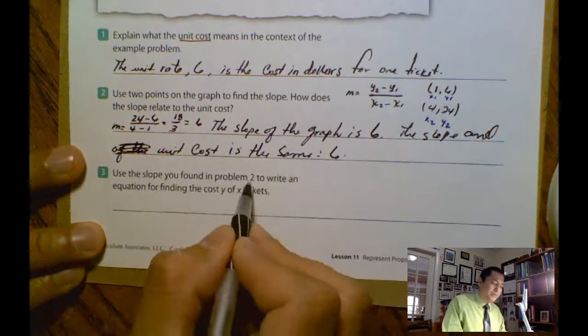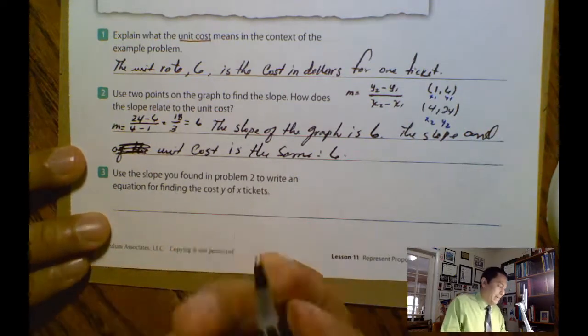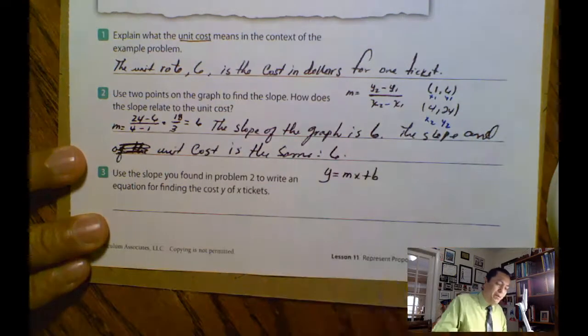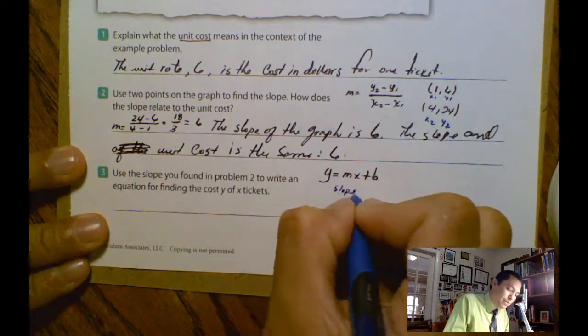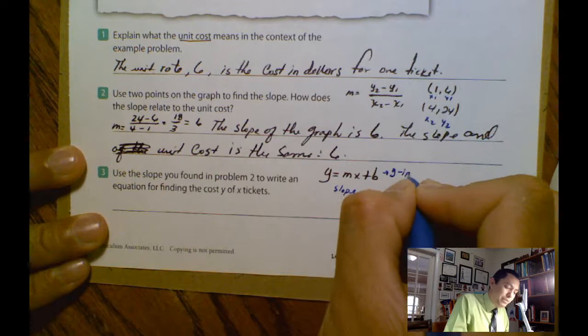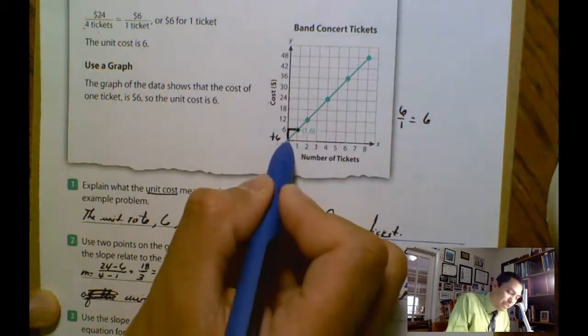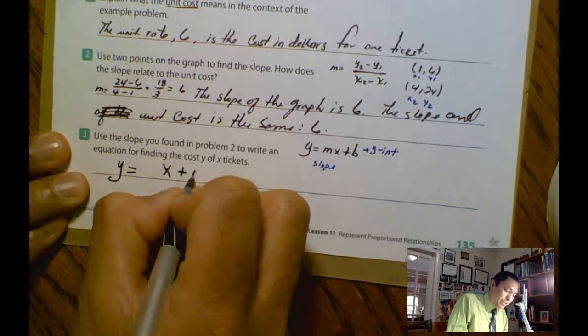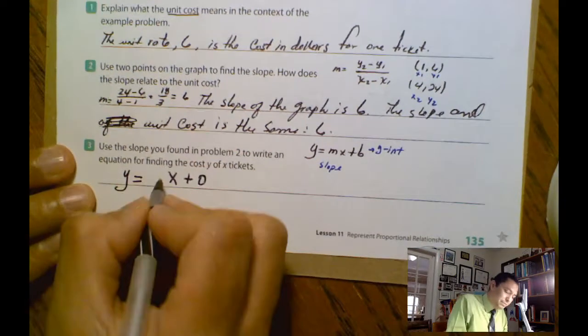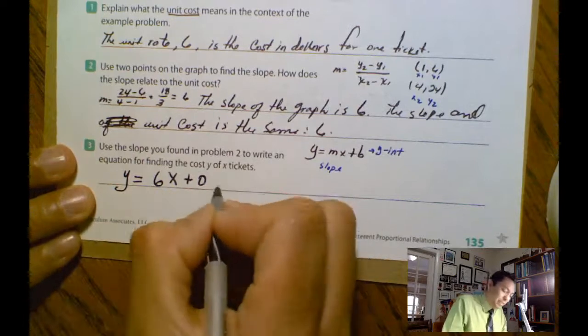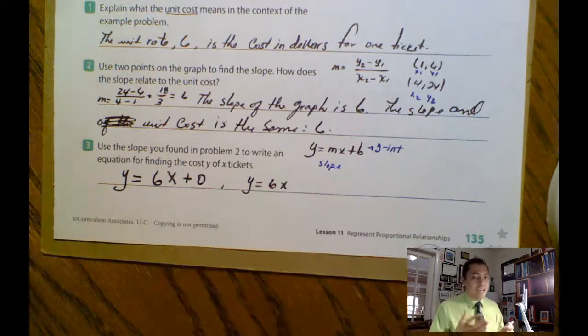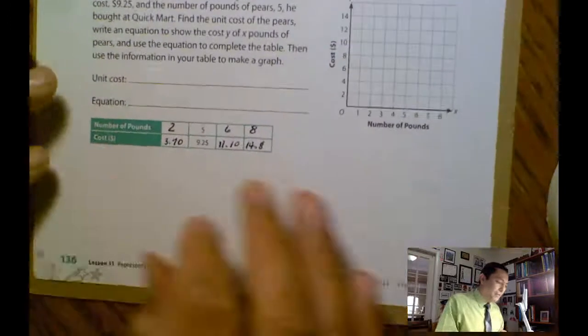Use the slope you found in problem 2 to write an equation. Find the cost y in x tickets. So you have the linear equation, y equals mx plus b, where m is the slope, b is the y-intercept. And as you can see in the graph, where does the graph start? In 0. The graph starts in 0. That means you're going to have y equals something x plus 0. So what is the slope? It's 6. It's 6x plus 0. But I mentioned that you don't write 0. So y equals 6x. That's the linear function.